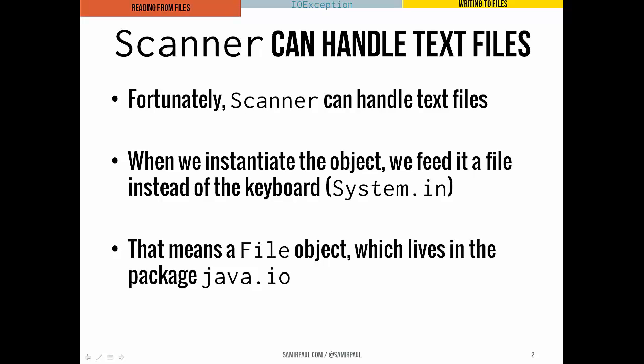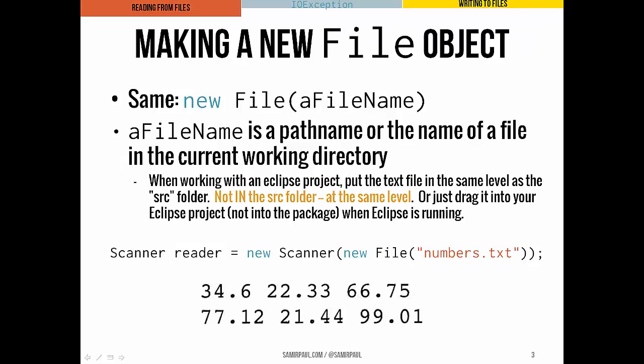The same Scanner class that we've been using to take keyboard input can be used on text files as well. All that's different is that instead of opening it on the keyboard object, System.in, we'll open it on a File object. Making a new File object looks the same as making a new object of any other kind. We use the new keyword, we have the name of the class, and in this case we pass one single parameter in — we pass a file name, which is the path name or the name of a file that we actually want to open.